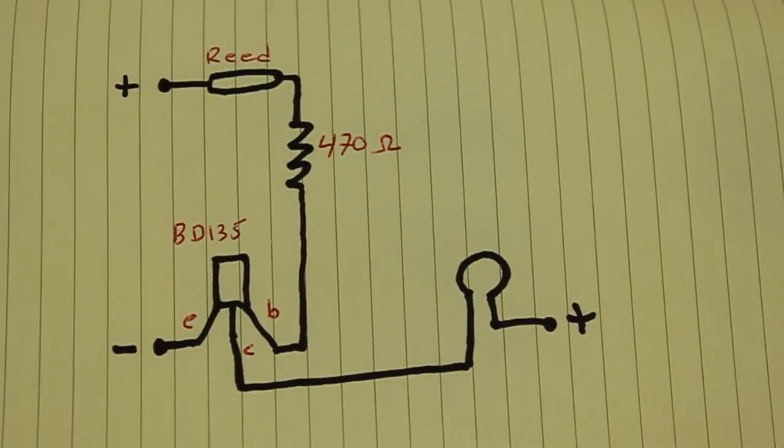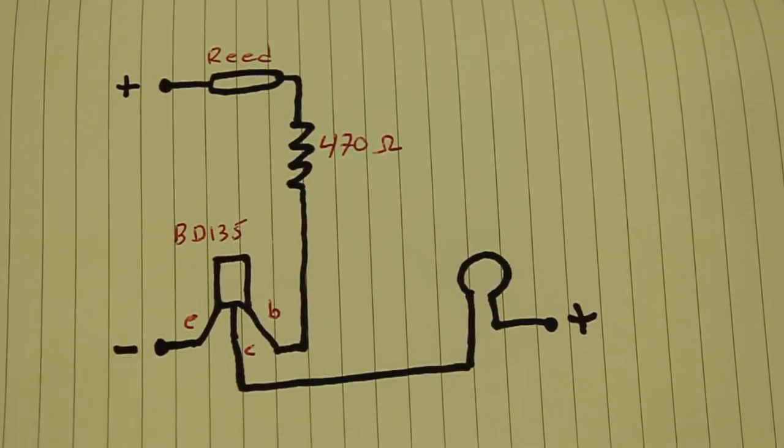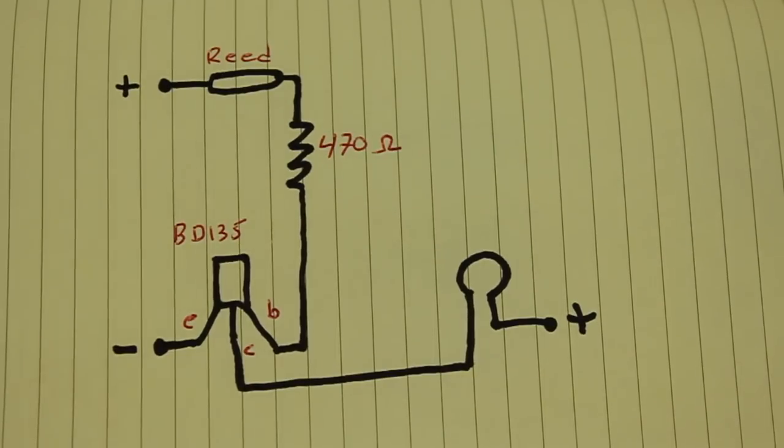The positive of the power supply goes here and here, and the negative to the emitter of the transistor. And that's it.